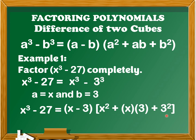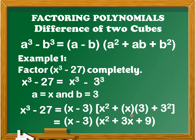Next, we're going to simplify this factor. So we have the quantity of (x minus 3) times the quantity of (x squared plus 3x plus 9), since x times 3 is 3x and the square of 3 is 9. Therefore, x cubed minus 27 is equal to (x minus 3)(x squared plus 3x plus 9).